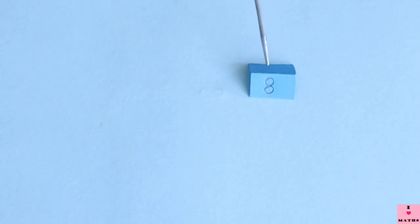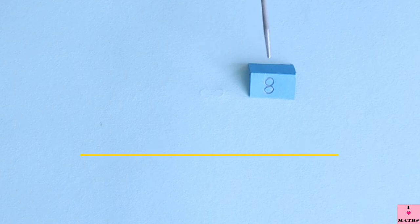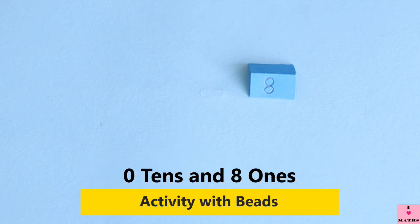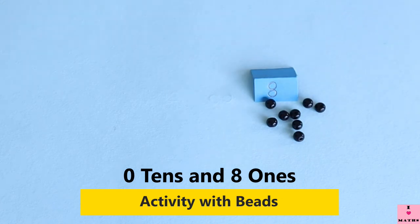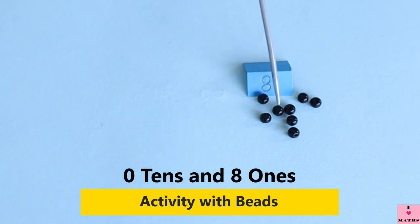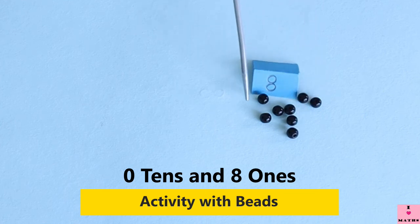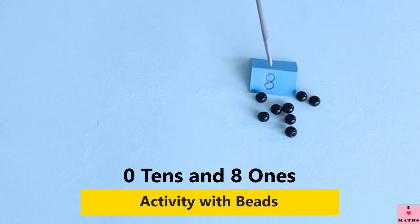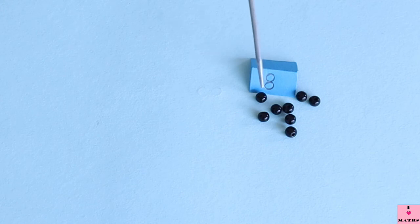This is 8. It's a single digit — there are no tens. So we will get loose beads only. 1, 2, 3, 4, 5, 6, 7, 8. So these are 8 beads. The number is 8, there are no tens, it is a single digit number. It means 8 ones, so these are 8 loose beads.